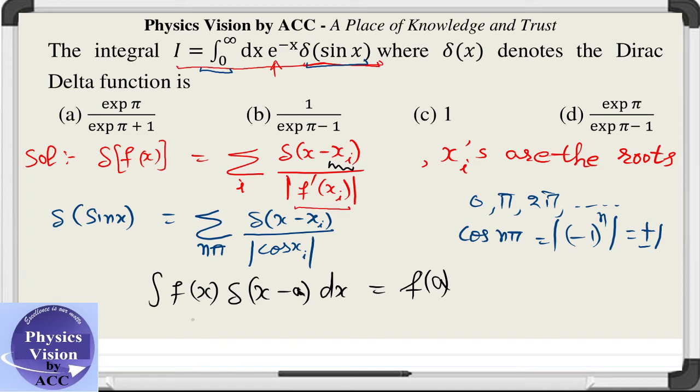So we will make use of these two properties. Now the given integral becomes summation of e raised to the power minus x into delta function of x minus n pi. And we have n varies from 0 to infinity.